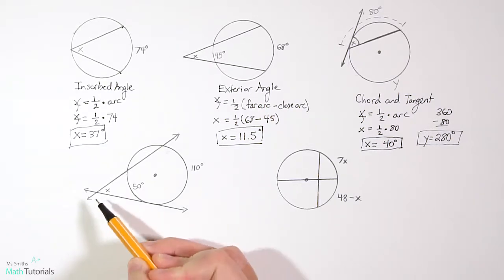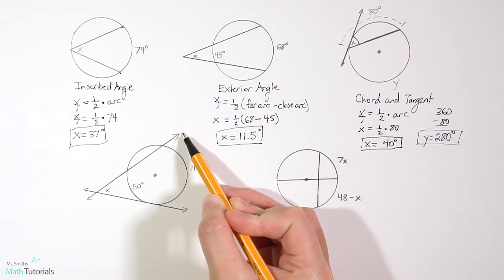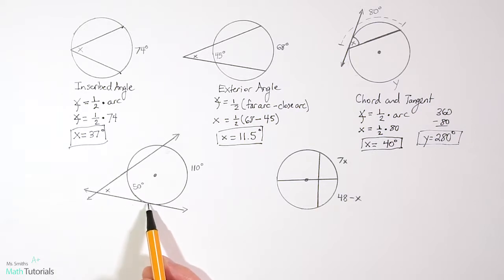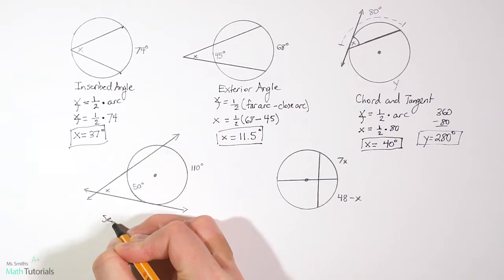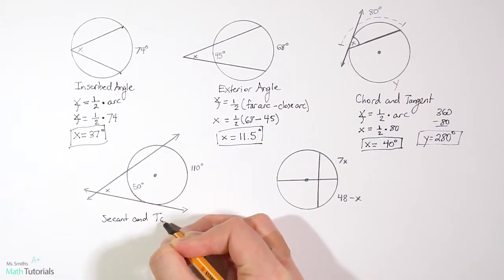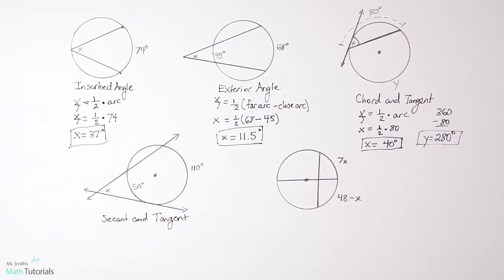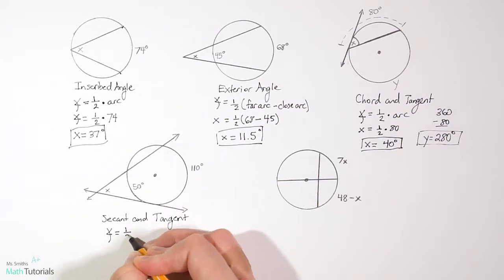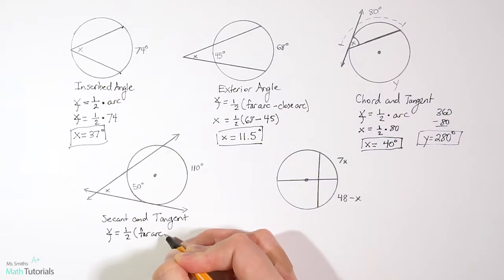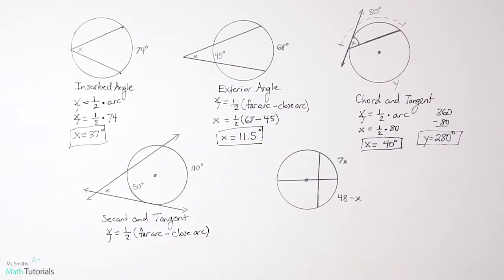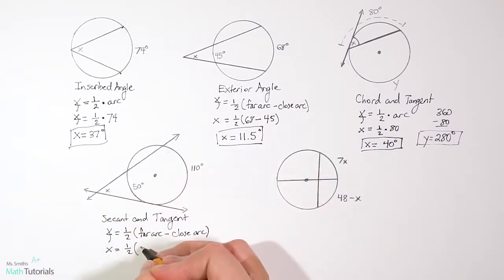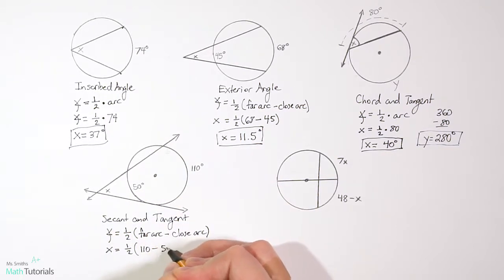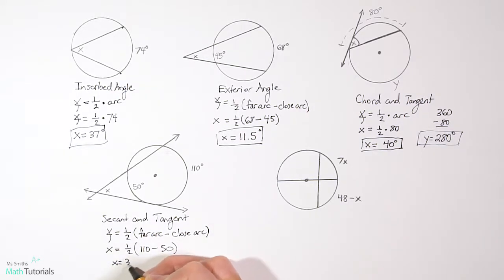In the next example, we have a secant — a line that cuts through a circle — and a tangent, a line that just touches the circle and keeps going. This is a secant and tangent. The formula is: angle equals one half times the far arc minus the close arc. So x equals one half times 110 minus 50. Typing that into the calculator gives x equals 30 degrees.